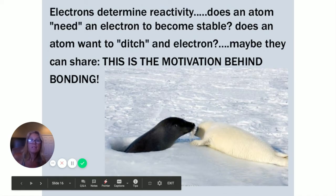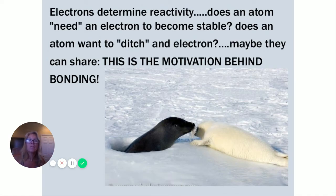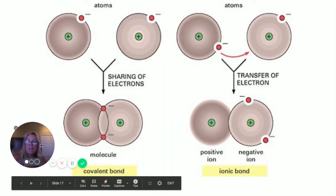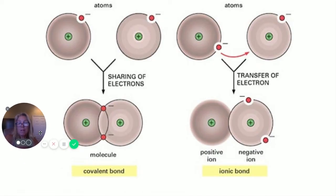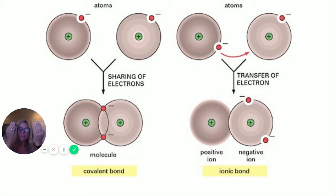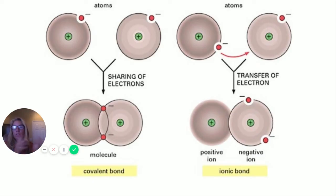The number of electrons determines reactivity: does an atom need an electron to become stable, does it want to ditch one, or will it share? That's the motivation behind bonding. There are two basic bond types we'll focus on right now: covalent bonds — where atoms share their outermost electrons in order to become stable — and ionic bonds.